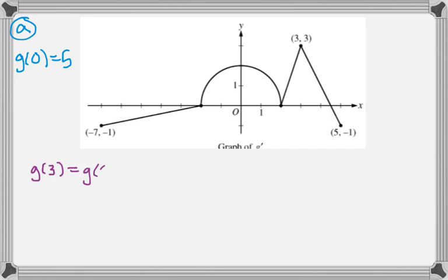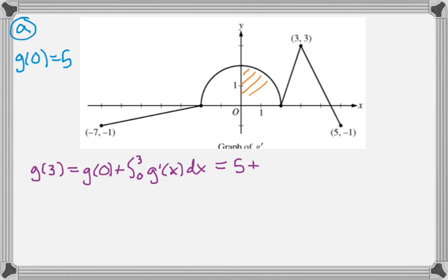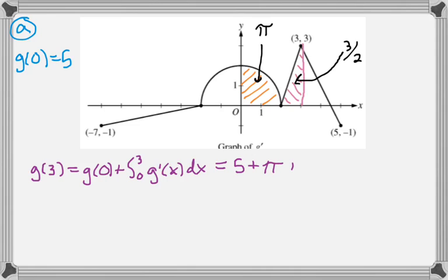The first thing is we need to find g(3), and by the fundamental theorem that should be g(0) plus the integral from 0 to 3 of g prime of x dx. We're told g(0) is 5, and now we're going to use some geometry. This is a circle of radius 2, so the full circle would have an area of 4π, but we only need a quarter of it, so that's π. And then there's a little triangle here which has a base of 1 and a height of 3, so it has an area of 3/2. We just add those values, and that's our answer for g(3).